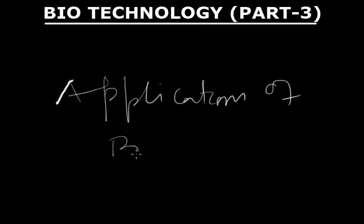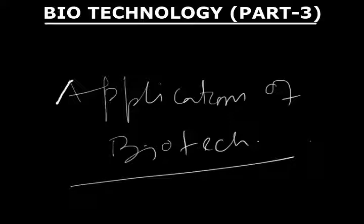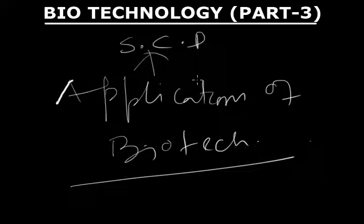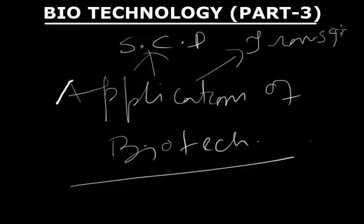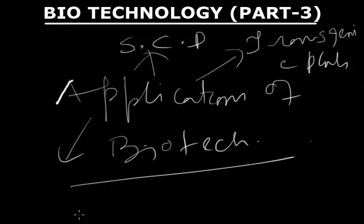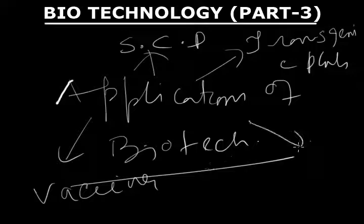In part 3 of biotechnology, when we start with applications of biotechnology, we need to mention that in different areas of modern scientific fields, biotechnology has got a lot of applicational areas. For example, in the production of single cell protein, in the formation of transgenic plants, in the synthesis of vaccines, and in the improvement of various processes.